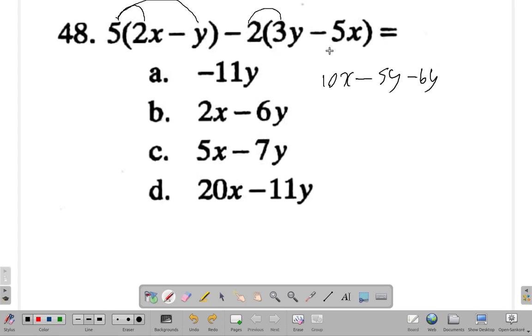Minus 2 times minus, negative 2 times negative 5 gives you positive 10x. That's where they get a lot of people, negative by negative here.